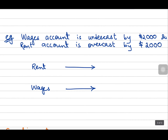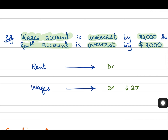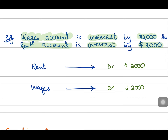Now let's move to our third example. The wages account is undercast by two thousand dollars and the rent account is overcast by two thousand dollars. Wages is an expense and appears on the debit side of the trial balance; rent is also an expense and also appears on the debit side. Wages are undercast, meaning less has been recorded by two thousand dollars, and rent is overcast, meaning more has been recorded by two thousand dollars. This error failed to be revealed by the trial balance because one is overstated and one is understated — the net effect was zero, so the debit side still matched the credit side.